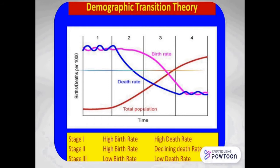Dear students, keenly observe the graph. This graph explains the three stages of population growth. In advanced population studies there are five stages, but in this session we will concentrate only on three important stages. In the first stage, both birth and death rates are very high; hence the population remains more or less stable. This situation prevails in most underdeveloped countries. Widespread poverty, illiteracy, poor health and sanitation facilities, early age marriages, and social beliefs are the reasons for this situation.